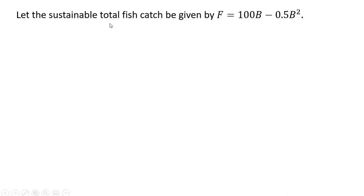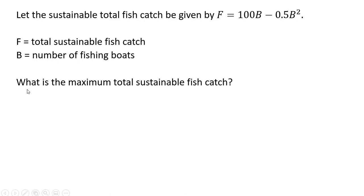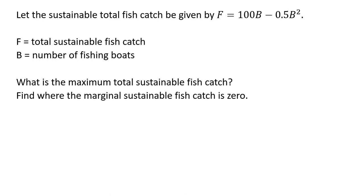Let's define the sustainable total fish catch by the following equation, where F equals the total sustainable fish catch and B is the number of fishing boats. To find the maximum total fish catch, we're going to find where the marginal sustainable fish catch is zero. We'll take the derivative of this equation with respect to the number of boats and set that result equal to zero because we're maximizing.